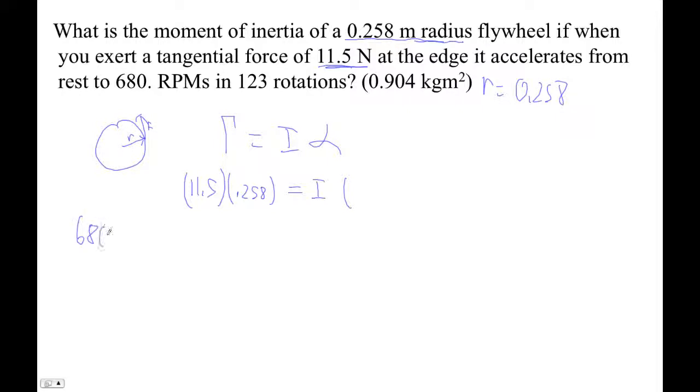So 680 RPM, 680 times 2 pi over 60, right? So times 2 pi to get radians per minute, divide by 60 for radians per second. 680 times 2 times pi divided by 60. Okay, so we're going to store that in V.